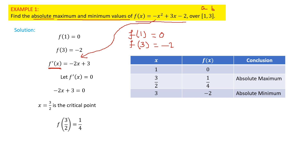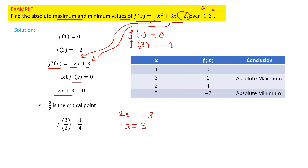To find the critical point, we differentiate the function: the derivative of -x² gives -2x, the derivative of +3x gives +3, and the derivative of a constant is 0. So f'(x) = -2x + 3. Setting -2x + 3 = 0, we get -2x = -3, and dividing both sides by -2 gives x = 3/2. So the critical point c = 3/2.